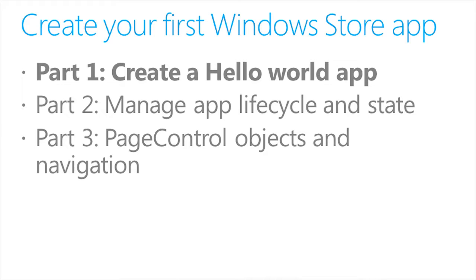In part two, Manage App Lifecycle and State, we'll discuss the app lifecycle and we'll extend the Hello World app by storing app data in Windows roaming settings and saving session state data using the WinJS application session state object. In part three, Page Control Objects and Navigation, we'll migrate our app to use the navigation app template and page control objects and we'll add an app bar to navigate between pages using the WinJS navigation service.